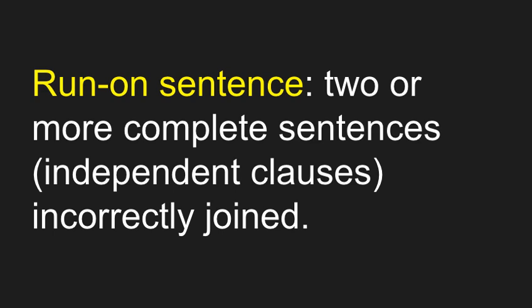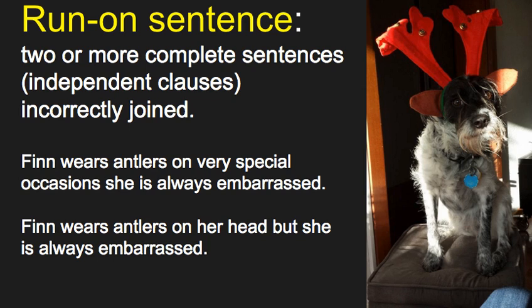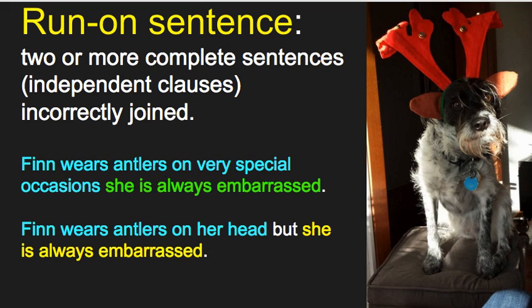That leads us to a run-on sentence. A run-on sentence is when you have two or more complete sentences incorrectly joined — and remember, a complete sentence is also known as an independent clause. Here's an example: 'Finn wears antlers on very special occasions she is always embarrassed.' This is known as a fused sentence — two sentences next to each other without any correct punctuation. Here's our first sentence in blue and our second sentence in green, without punctuation.